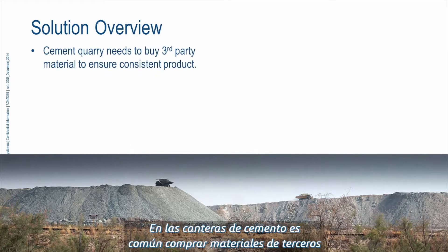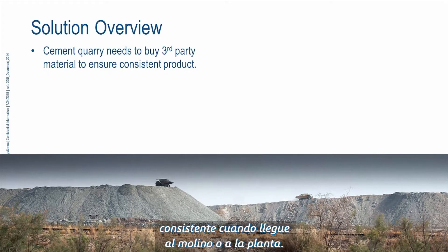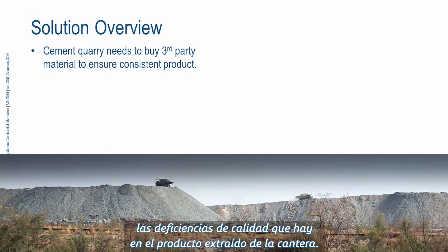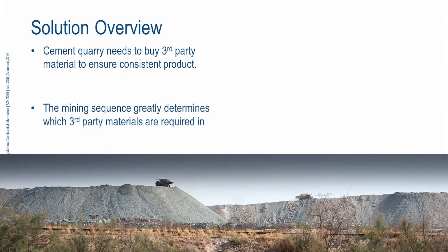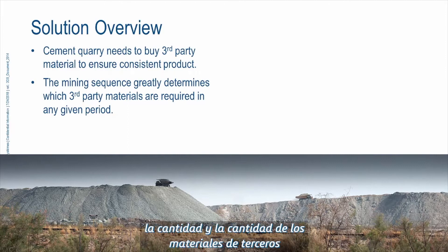In a cement quarry it's very common to purchase third-party materials to supplement the material coming out of the quarry itself. The reason for this is they need to ensure that the material is of consistent quality when arriving to the mill or plant, and they use third-party materials to address shortcomings in the quality of the product coming out of the quarry. The mining sequence really does determine what material comes out of the quarry, and that in turn determines the quantity and quality of the third-party materials required to make up for quality deficiencies.